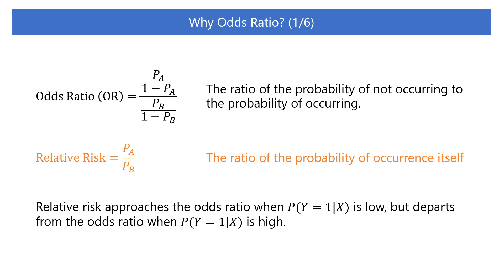Relative risk represents the ratio of the probability of occurrence itself, while the odds ratio represents the ratio of the probability of not occurring to the probability of occurring. Relative risk approaches the odds ratio when the probability of occurrence is low, but departs from the odds ratio when the probability of occurrence is high.